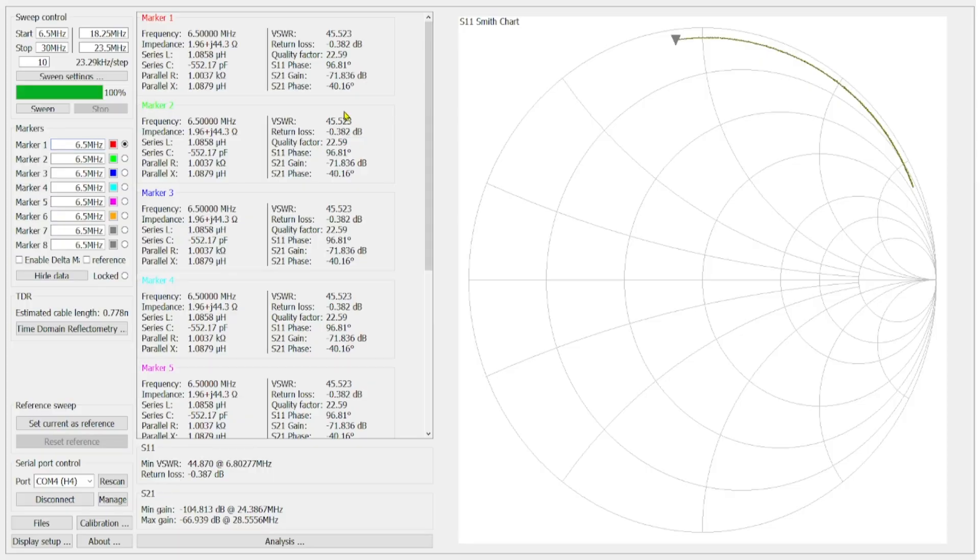All right, the sweep's done and looking at our smith chart here you can see that we are now on the inductance side of the smith chart on the north side. Let's go back over here and we set our marker for our frequency of interest in the 20 meter band. When I come over here what we can see under series inductance is 1.174.